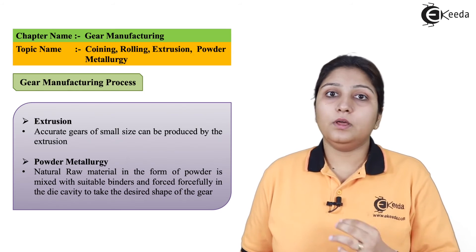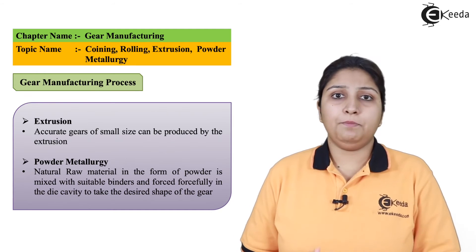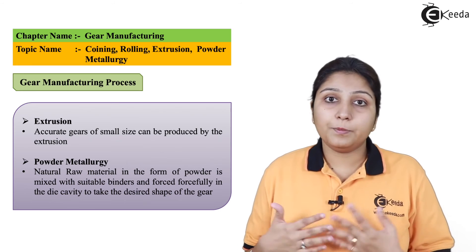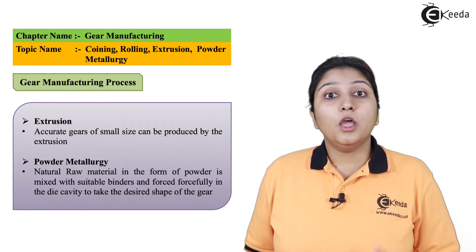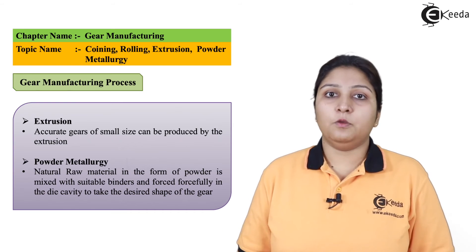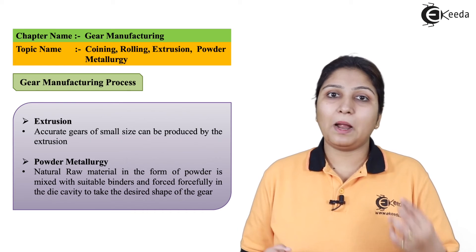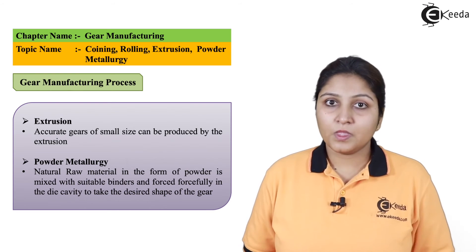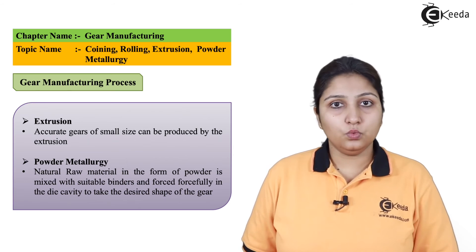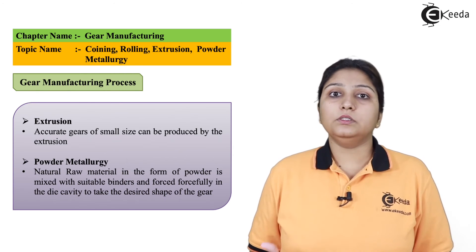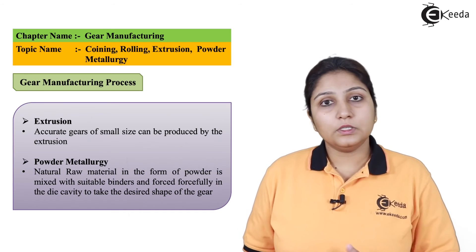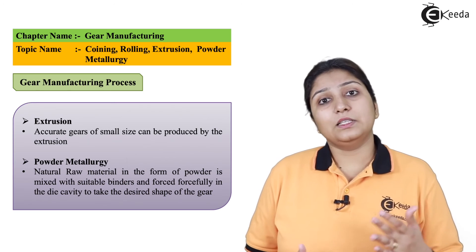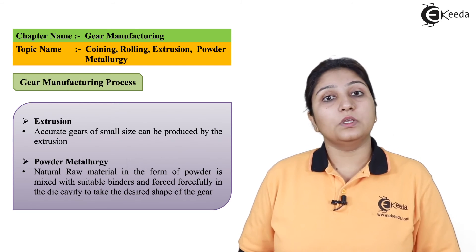The next process is powder metallurgy. You take a prescribed shape in the form of the gear to be produced with prescribed dimensions, and fill the material inside in the form of small particles or powder, irrespective of the material. Suitable binders are used so that the powders can be bonded together. The process can involve sintering, binding, and various other powder metallurgy operations, all used for producing a gear.